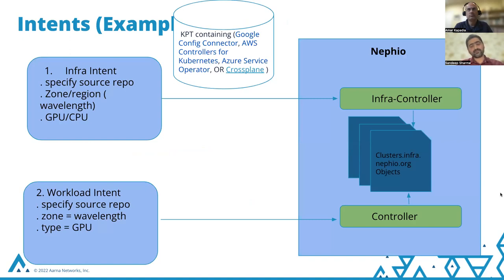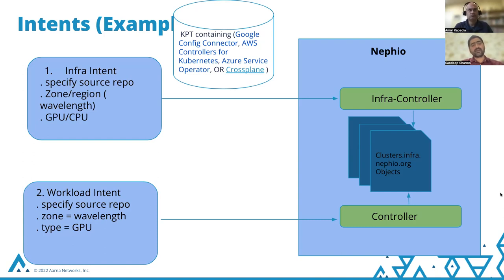This slide shows the concept of intents at a high level. In this demonstration, the user specifies two high-level intents: first the infrastructure intent, followed by the workload intent. In the infra intent, all the user needs to specify is the properties of the infra they want to create — for example, zone, region, wavelength zone, and properties like whether a GPU is required in the target cluster. These high-level intents are then understood by the infrastructure controller specifically in NEPheo, which performs the job of creating the infra based on the intent specified.